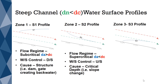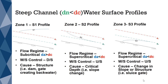An S3 profile is formed in Zone 3, when the flow regime is supercritical. A supercritical flow condition occurs when the actual depth is less than the critical depth. Flows that are supercritical are always controlled upstream. For an S3 profile to occur, there needs to be something upstream causing the water surface to be below critical. This will occur when there is a slope change or a sluice gate.